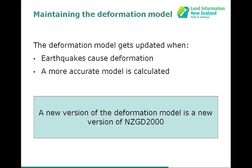Because we don't know what will happen with deformation in the future, we have to maintain this model as events occur. We can't just provide a deformation model and say that's the definitive model for New Zealand, because earthquakes keep happening. We also have to maintain it because although we did our best in 2000 to work out the secular velocity field, we have a lot more information now and much better models. So periodically there's a new version of the deformation model, which in effect means a new version of the datum NZGD2000.